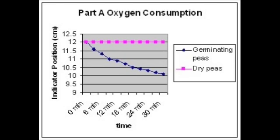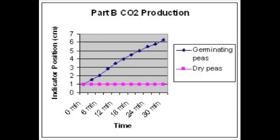As you can see from our graphs, the germinating peas continuously consumed oxygen, displaying that they were respirating. The dry peas, on the other hand, did not respirate. The result was the same for the CO2 and O2 production and consumption. But more CO2 was produced than oxygen consumed.